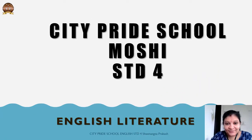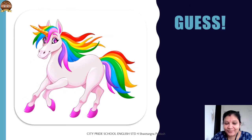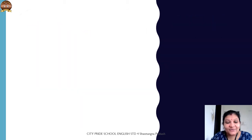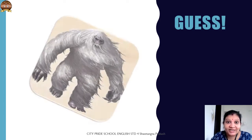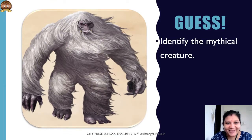We are going to study a new lesson. First, let's play a game — we have to guess which mythical creature it is. A unicorn! What is a mythical creature? The word 'mythical' is made from 'myth.' What is a myth? Something that is heard of but there is no proof. Keep on identifying.